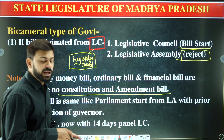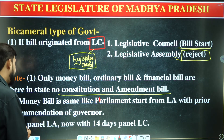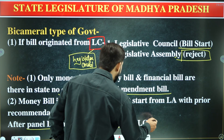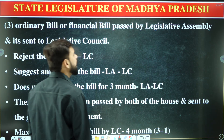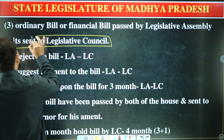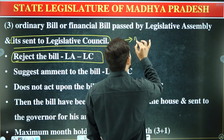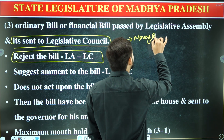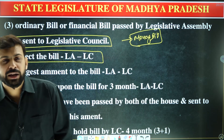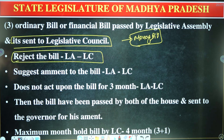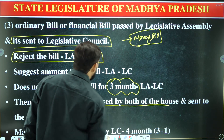For a money bill, the same procedure applies — prior recommendation of the Governor is required for introduction in the legislative assembly. The legislative council has 14 days to consider a money bill. For an ordinary bill or financial bill: it is passed by the legislative assembly and then sent to the legislative council. If the legislative council passes it, the bill proceeds; if the legislative council rejects it, the bill is considered passed by both houses and sent to the Governor.